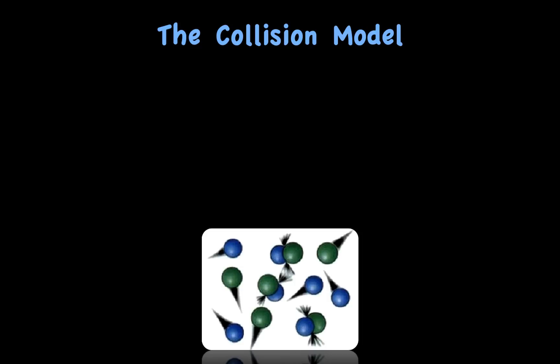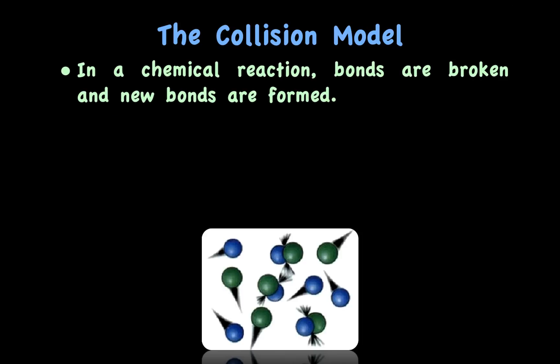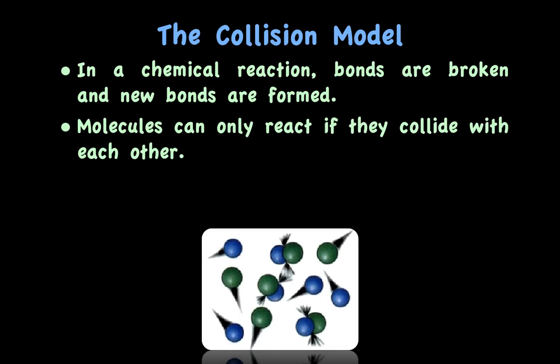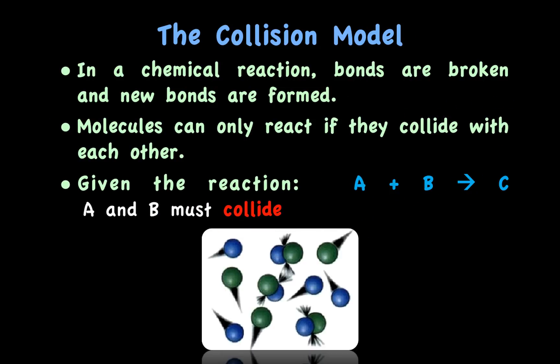Let's now consider the collision theory or collision model. In a chemical reaction, bonds are broken and new bonds are formed. Molecules can only react if they collide with one another — a collision is necessary for a reaction to occur. Given the reaction A plus B goes to C, A and B must collide. There has to be a collision.